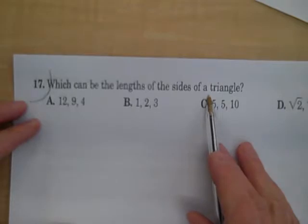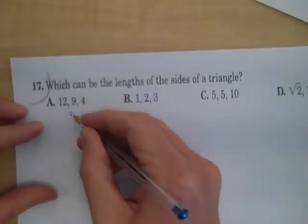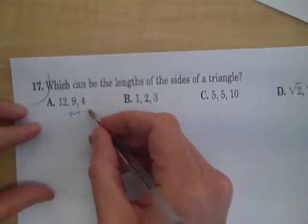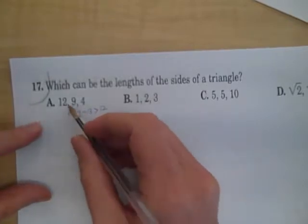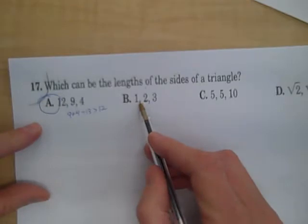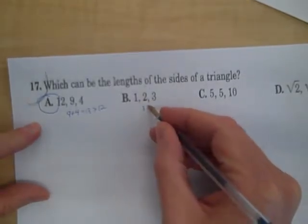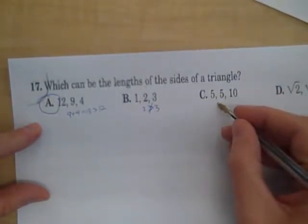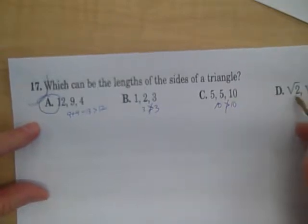Which can be the lengths of the sides of a triangle? Well, this is the last thing we did. Let's take the two short sides. 9 plus 4 is equal to 13, and that is greater than 12, the third side. So this looks like this one can be. What I'd like to see is can these... 1 plus 2 is 3. 3 is not greater than 3. 5 plus 5 is 10. 10 is not greater than 10.